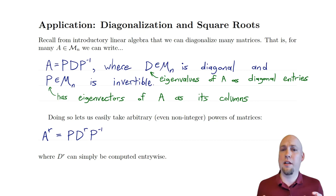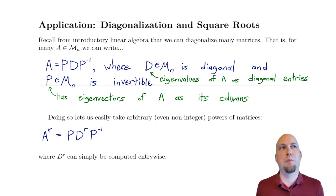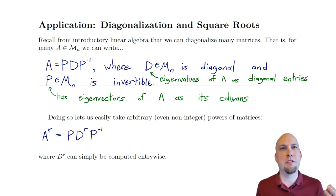In particular, we're going to go through two examples. The first one, we're going to talk about how we can construct the square root of a linear transformation — in particular, the transpose linear transformation. How can we find a linear transformation with the property that when you apply it twice, you get the transpose of a matrix? This seems very counterintuitive, because all the transpose map does is rearrange entries in a matrix. So how can you find a linear transformation that you have to apply twice to just swap the positions of entries in the matrix?